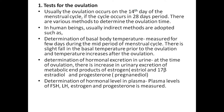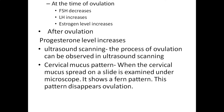Determination of hormone levels in the plasma: plasma levels of FSH, LH, estrogen, and progesterone are measured. At the time of ovulation, FSH decreases, LH increases, and estrogen level increases.